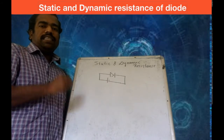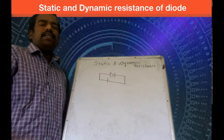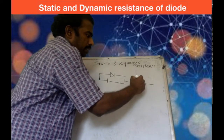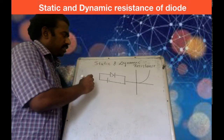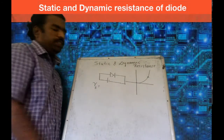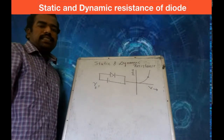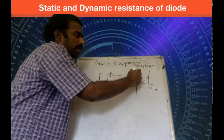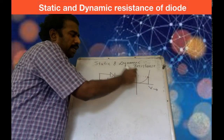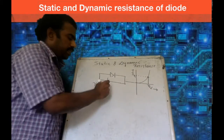Static resistance is the resistance offered by the diode when a DC source is connected. If you draw the forward characteristics curve, with voltage on the x-axis and current on the y-axis, you can calculate static resistance. For a particular operating point, the corresponding voltage is V1 and the corresponding current is I1. So the static resistance is V1 divided by I1.